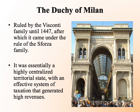The Duchy of Milan was dominated by two families in succession: first the Visconti family, who ruled until 1447, and then the Sforza family — a very highly centralized territorial state, these families ruling almost as dictators but very wealthy. They had a very effective system of taxation that generated high revenues. They will become patrons of some Renaissance art, though not quite on the same level as Florence. For instance, Leonardo da Vinci will take up residency there at some point, which is why if you want to see his painting of the Last Supper, you have to go to Milan.